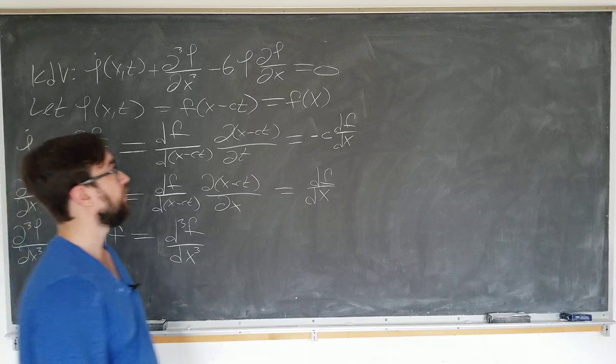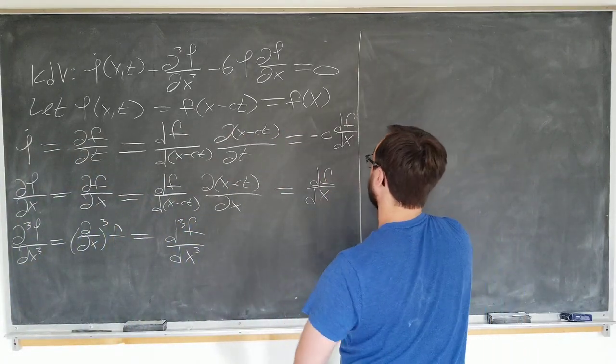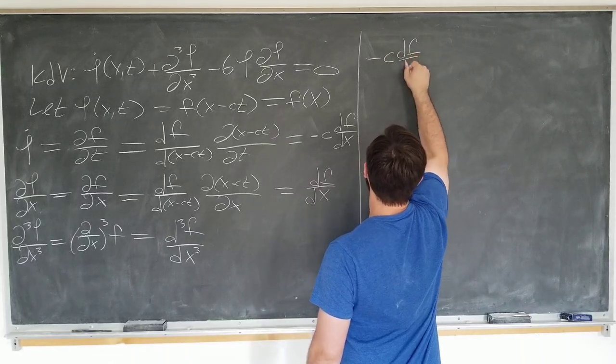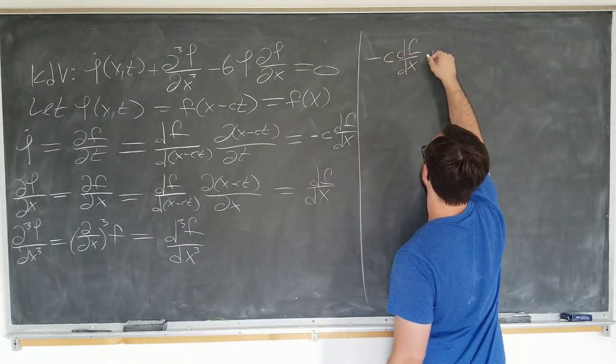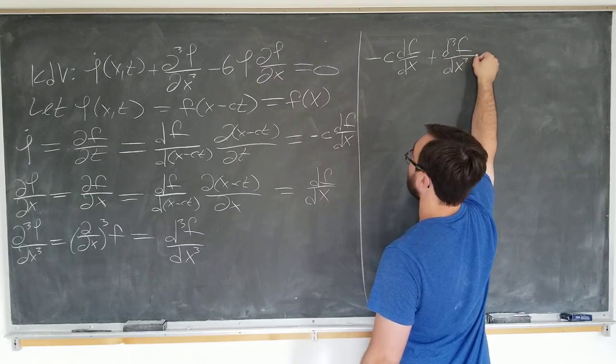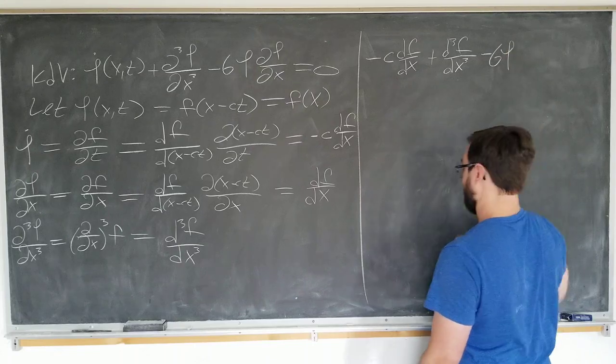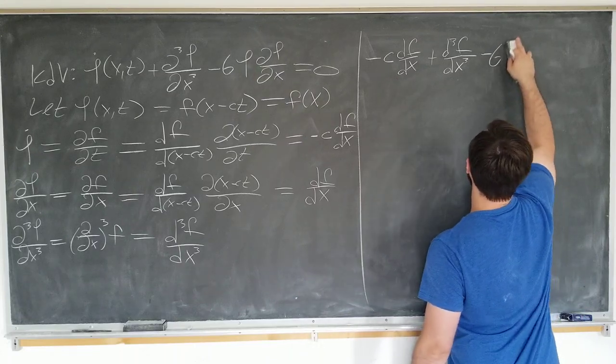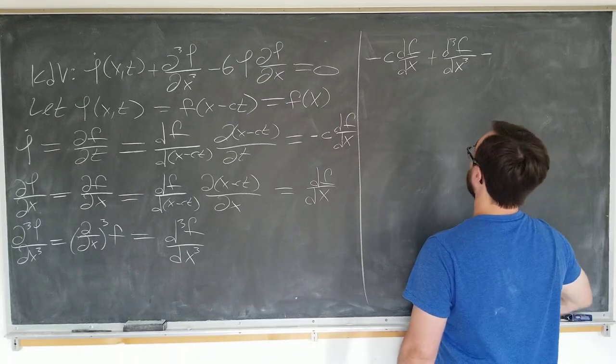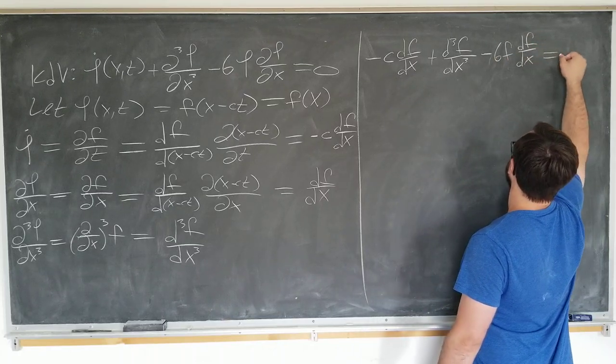Now we can go ahead and transform our equation here. So now we have minus c df by dx plus d cubed f by dx cubed minus 6 f df by dx is equal to 0.